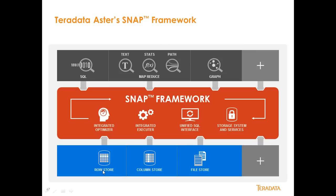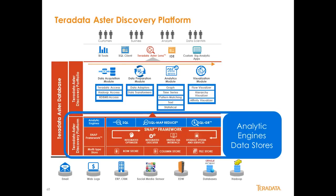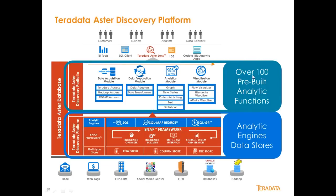These data structures could be row stores or column stores, the Aster file system, or one of the connectors to the Teradata EDW or the Hadoop infrastructure. That's the SNAP framework. Probably the most important thing about Aster is the over 100 pre-built analytical functions, which fall into basically four types.